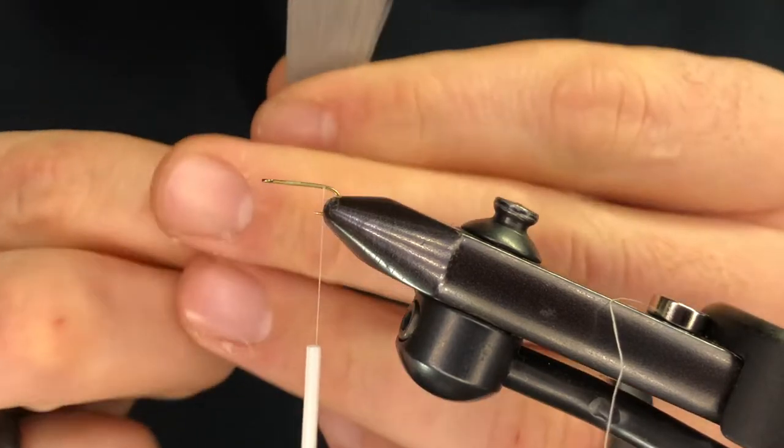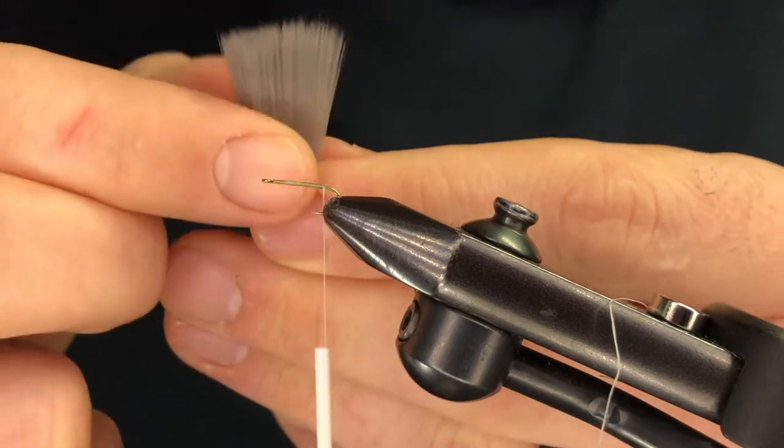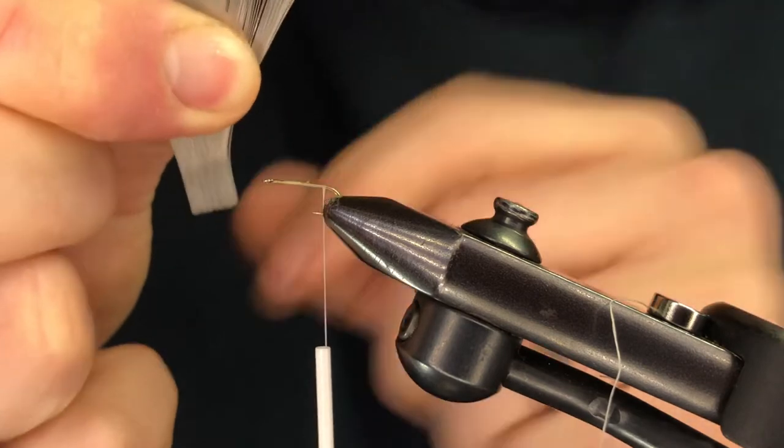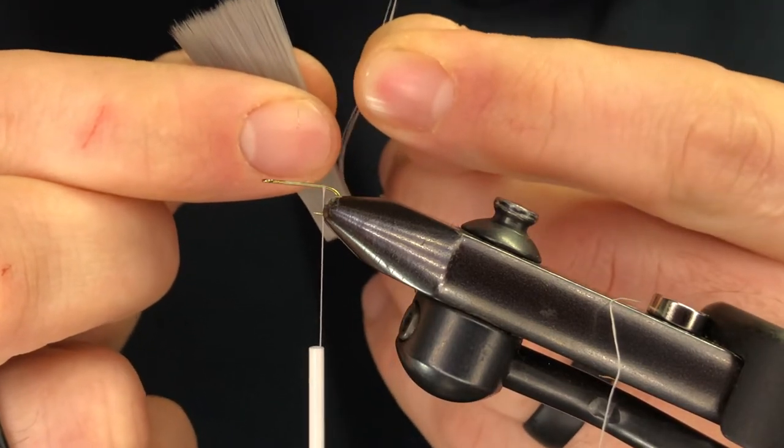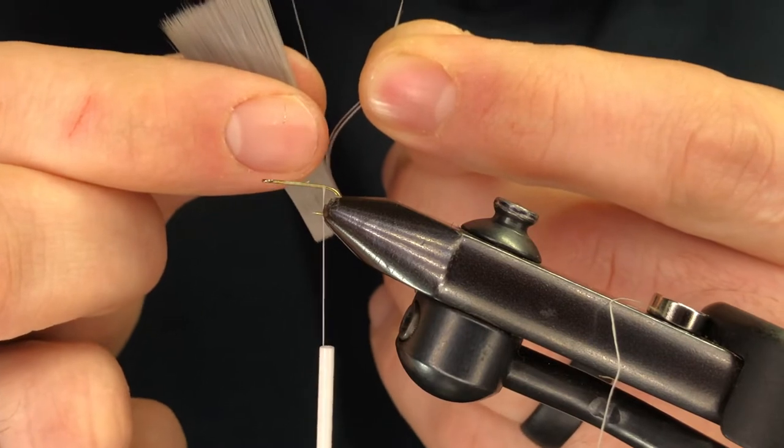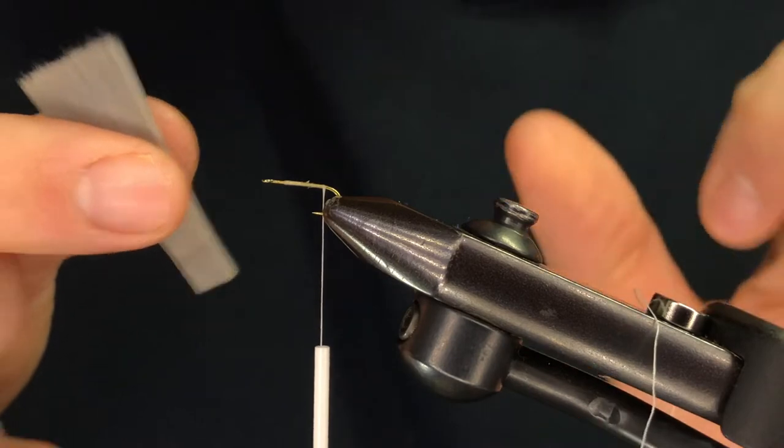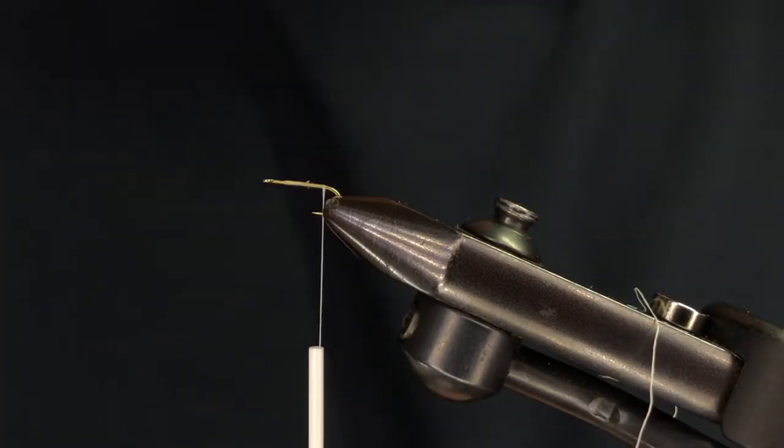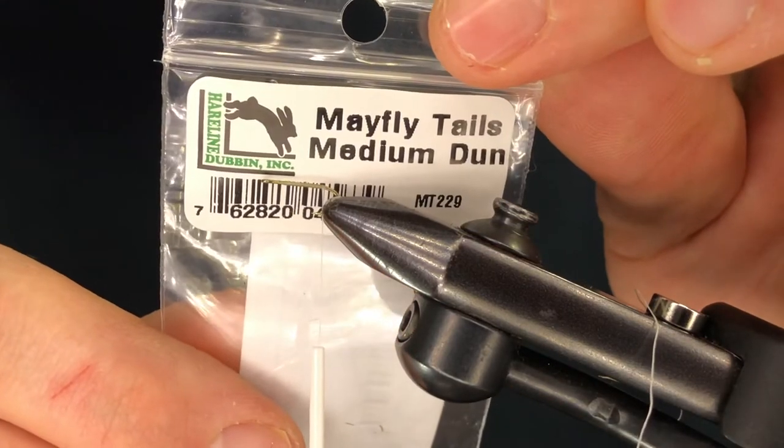Trick to getting these off of here because my eyes have gotten to the point where I can't see them as well. Squeeze this tight between your thumb and index finger at the end and try and get two, three if you can, sometimes four and then pick off what you need. Don't worry about it too much. It doesn't have to be perfect. This is what the package looks like we're using tonight. It says mayfly tails, medium dun.